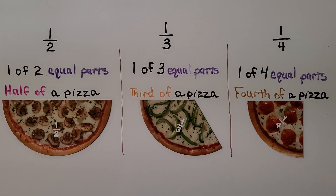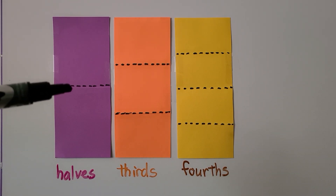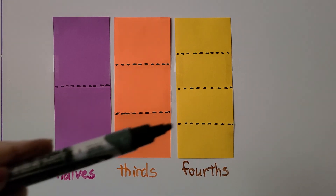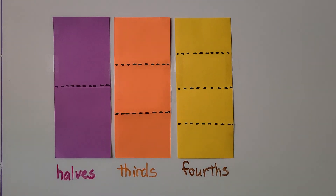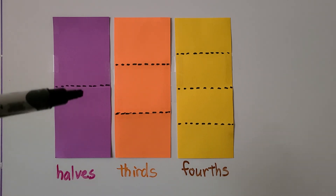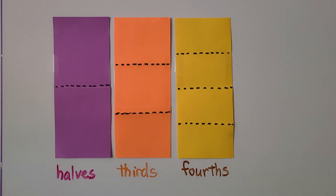So the fewer the parts, the bigger the piece. These three cards are the same size, but this one was folded into halves, this one into thirds, and this one into fourths. We can see the more we folded it, the smaller the parts became. The half is a much greater part than a third or a fourth.